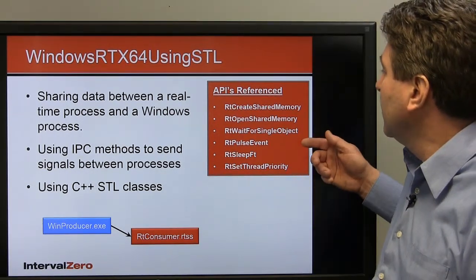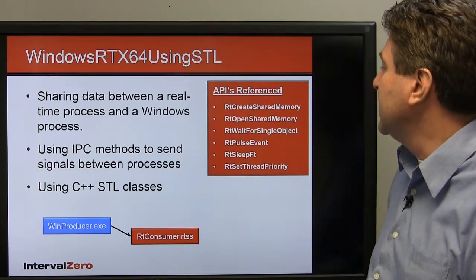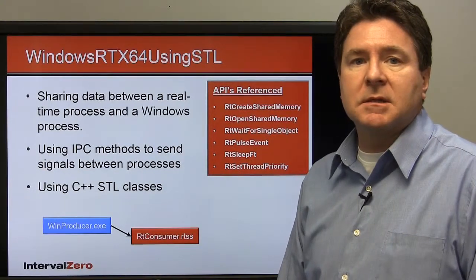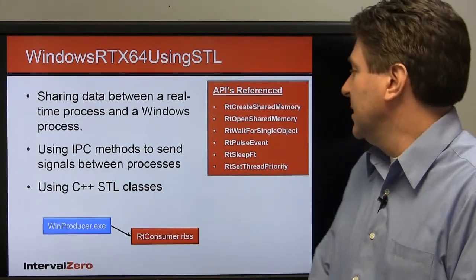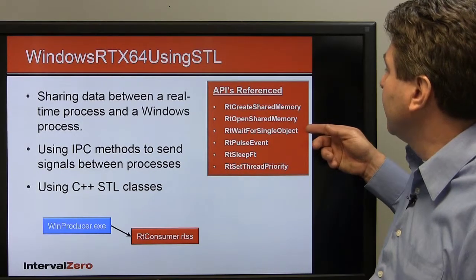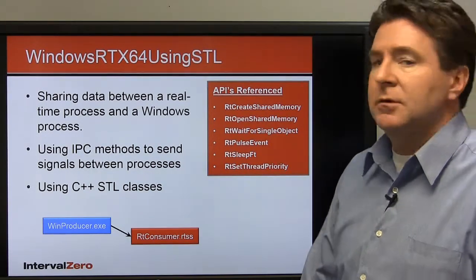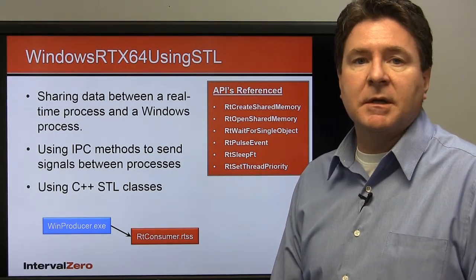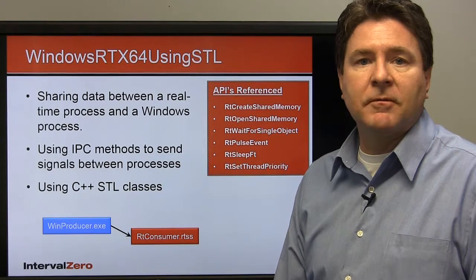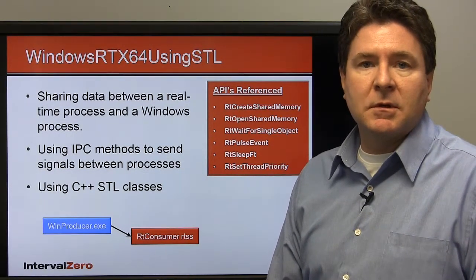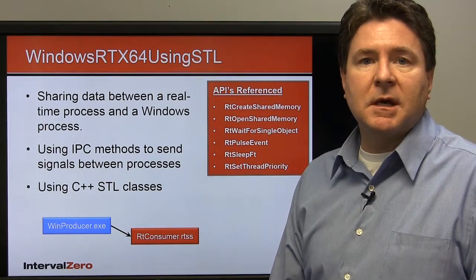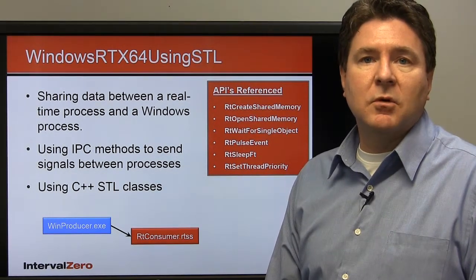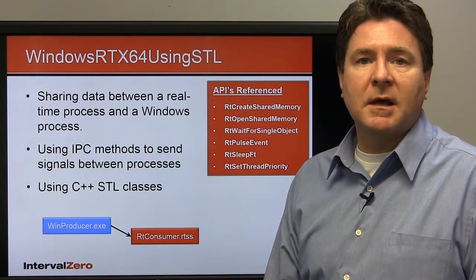We use RT pulse event as our IPC mechanism. When one of the processes gets a notification, the RT wait for single object is signaled. The producer copies data to the shared memory area — a single area in memory that both processes can look at. When the consumer gets it, it can signal the producer saying it's consumed that data and can send more. So they ping-pong back and forth and pass data.